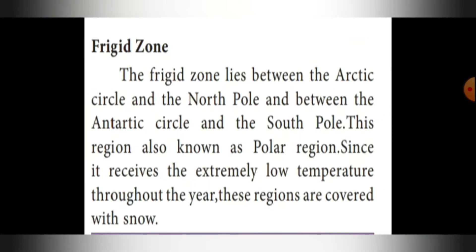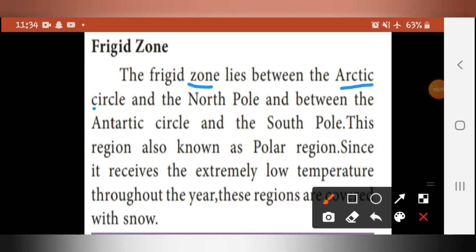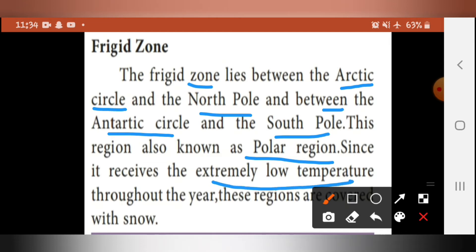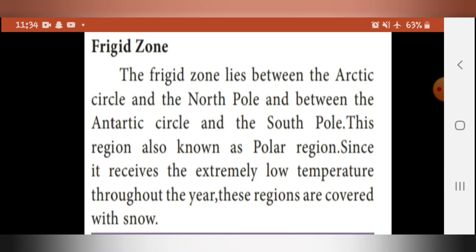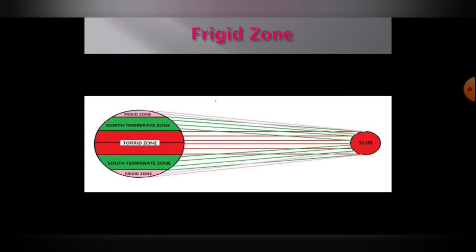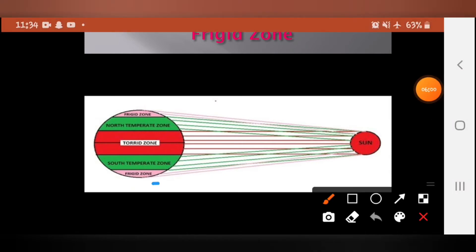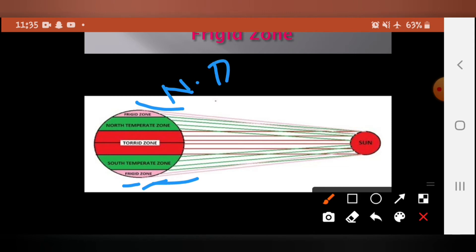The third zone is the frigid zone. It lies between the Arctic Circle and the North Pole, and between the Antarctic Circle and the South Pole. This region is also known as the polar region. The sun's rays fall very slantingly here, so it receives extremely low temperature throughout the year, and these regions are covered with snow.